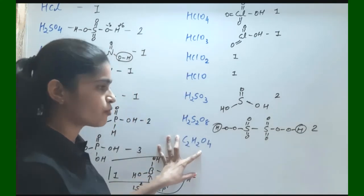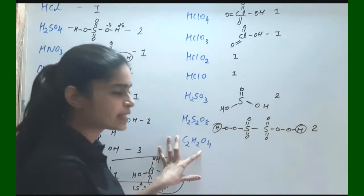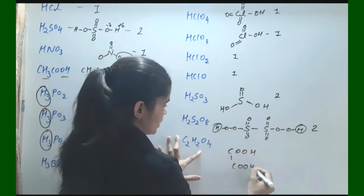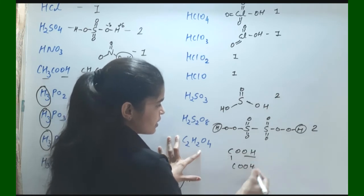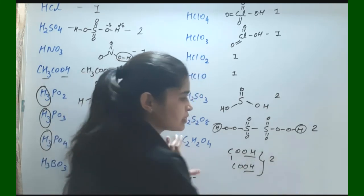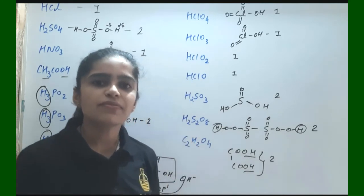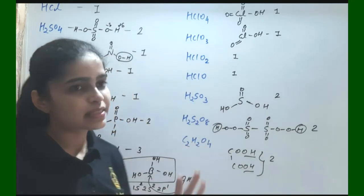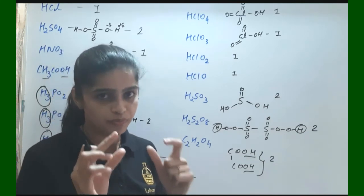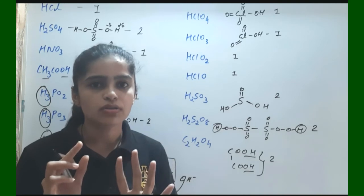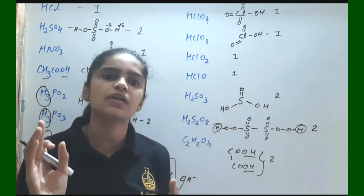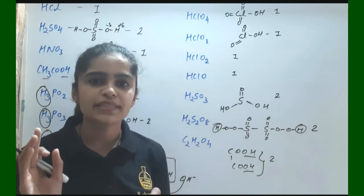Next is C₂H₂O₄, which is the formula of oxalic acid. Oxalic acid has the structure with two COOH groups — two OH groups where H is easily replaceable. So its basicity is 2. To summarize: to find basicity, consider only the bond between hydrogen and oxygen. When an O–H bond is present, that hydrogen is replaceable and is counted in the basicity.